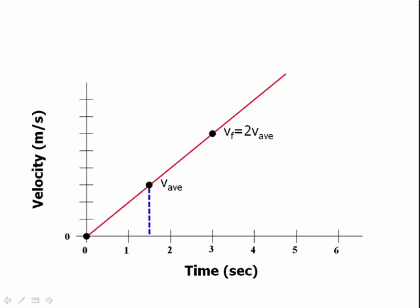So for the first second and a half, this cart is speeding up from zero to one V average, and for the second half of the journey, the second second and a half, it's going from V average to twice V average.